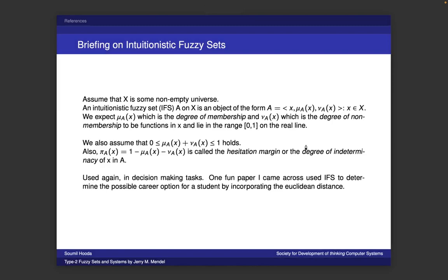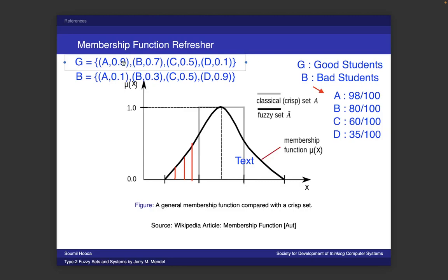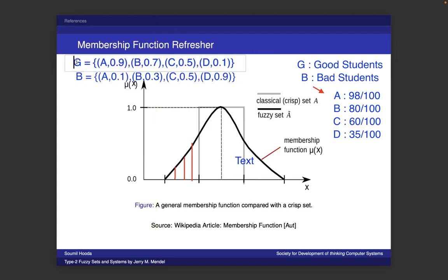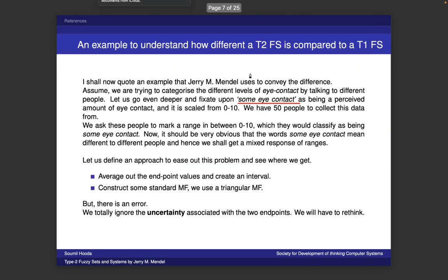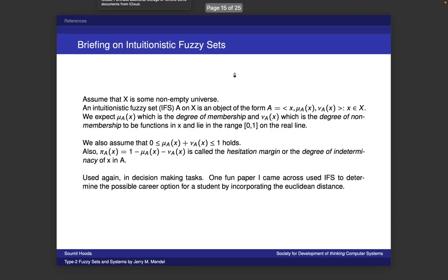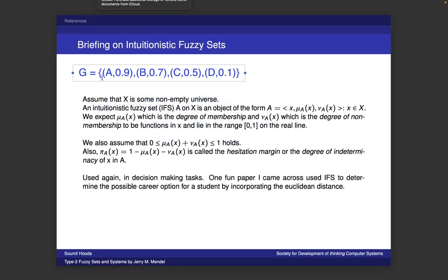Moving on, we'll go on to intuitionistic fuzzy sets. For intuitionistic fuzzy sets, I like to bring back the old example. Going back to our set of good students: student A has a membership value of 0.9 associated with the fuzzy set 'good student' and student D has a value of 0.1. This gives us 1D information — this element has this value associated with the set. What we want to do with intuitionistic fuzzy sets is also know the degree of non-membership — the degree of it not being associated with this set.